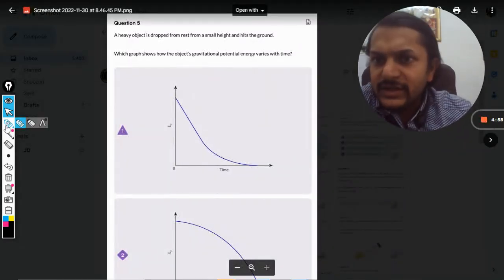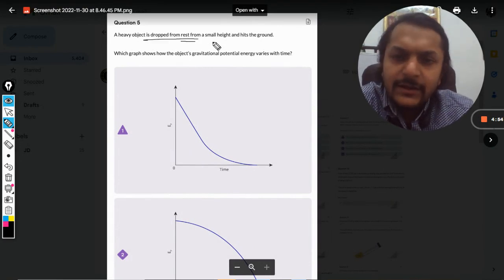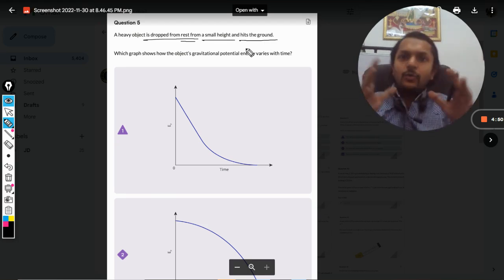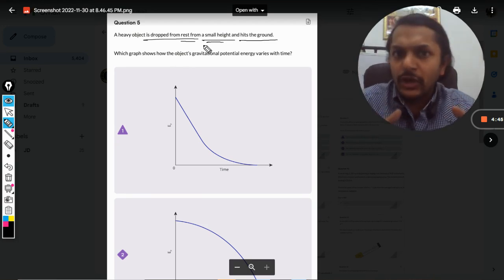Okay dear students, let us see what is there in this question now. A heavy object is dropped from rest from a small height and hits the ground. Why is it given that it's falling from a small height?